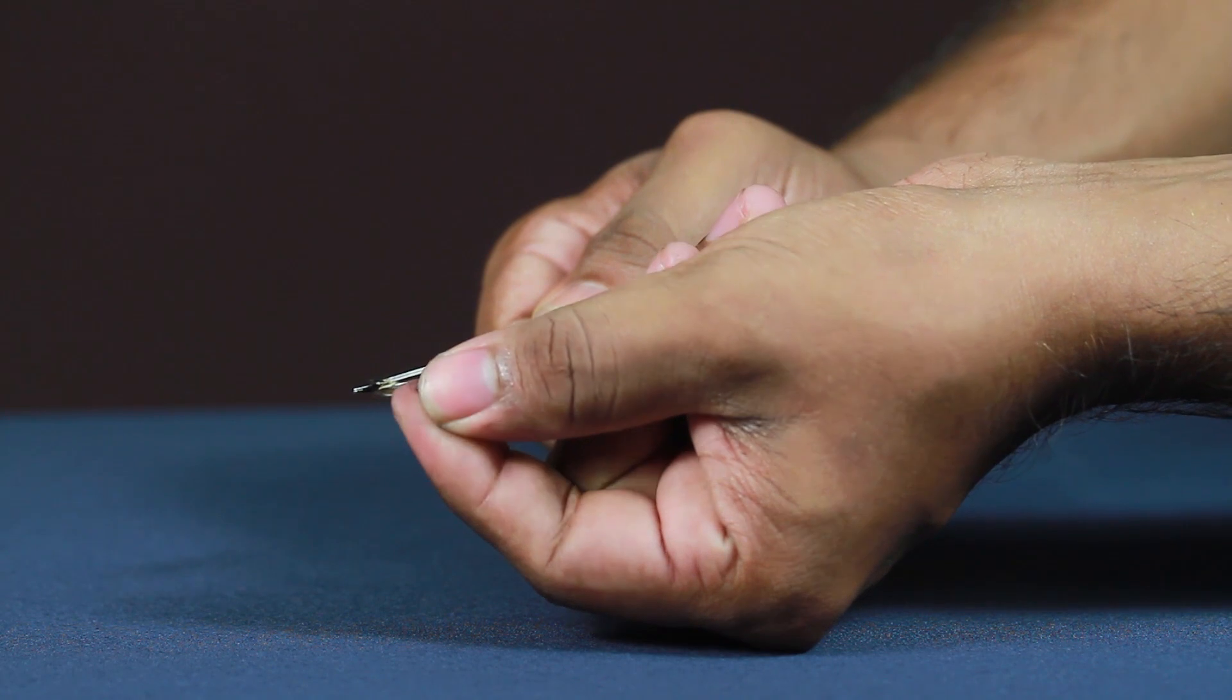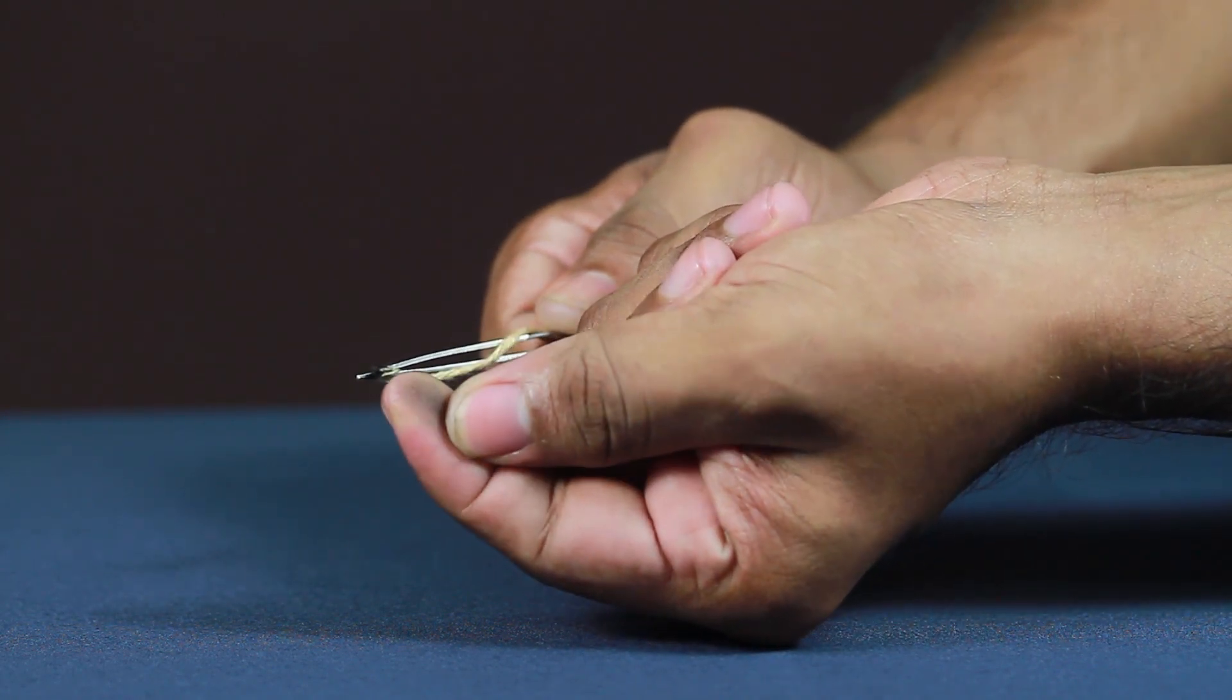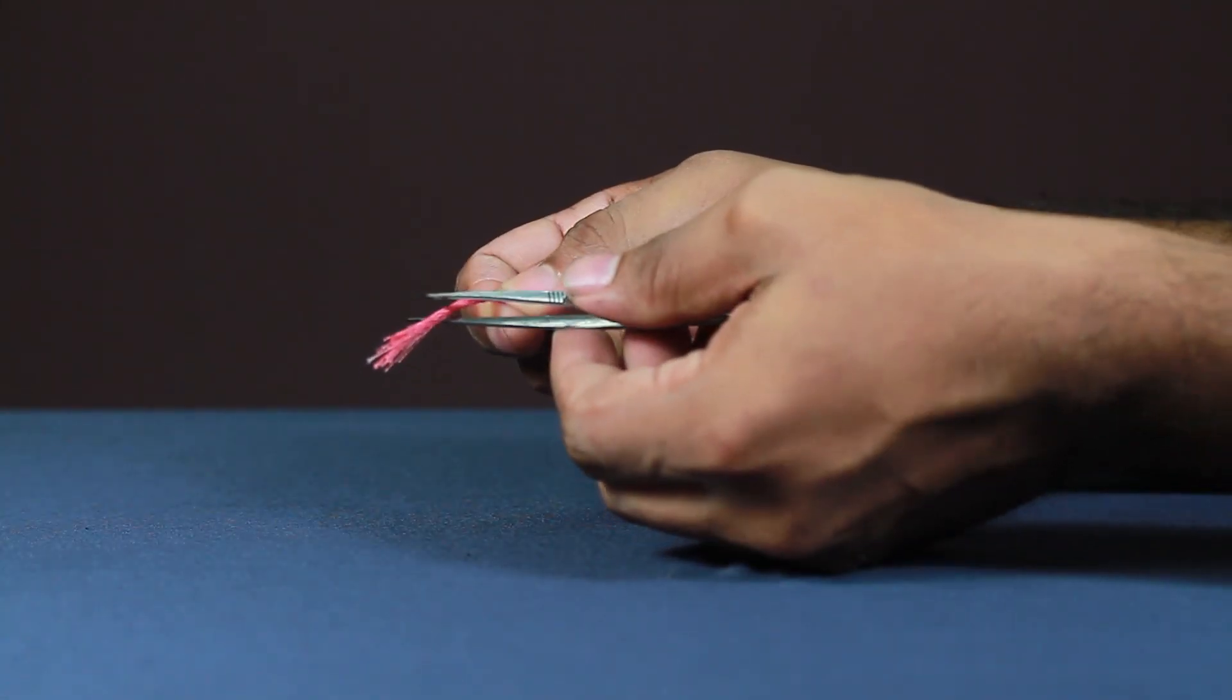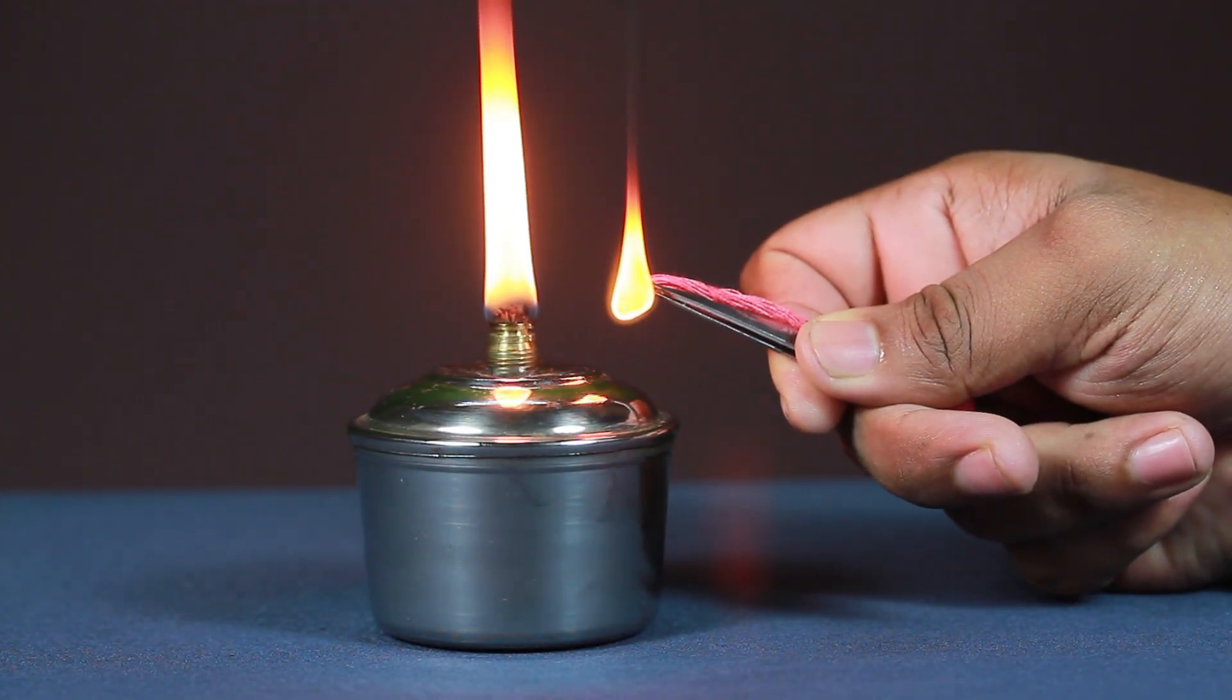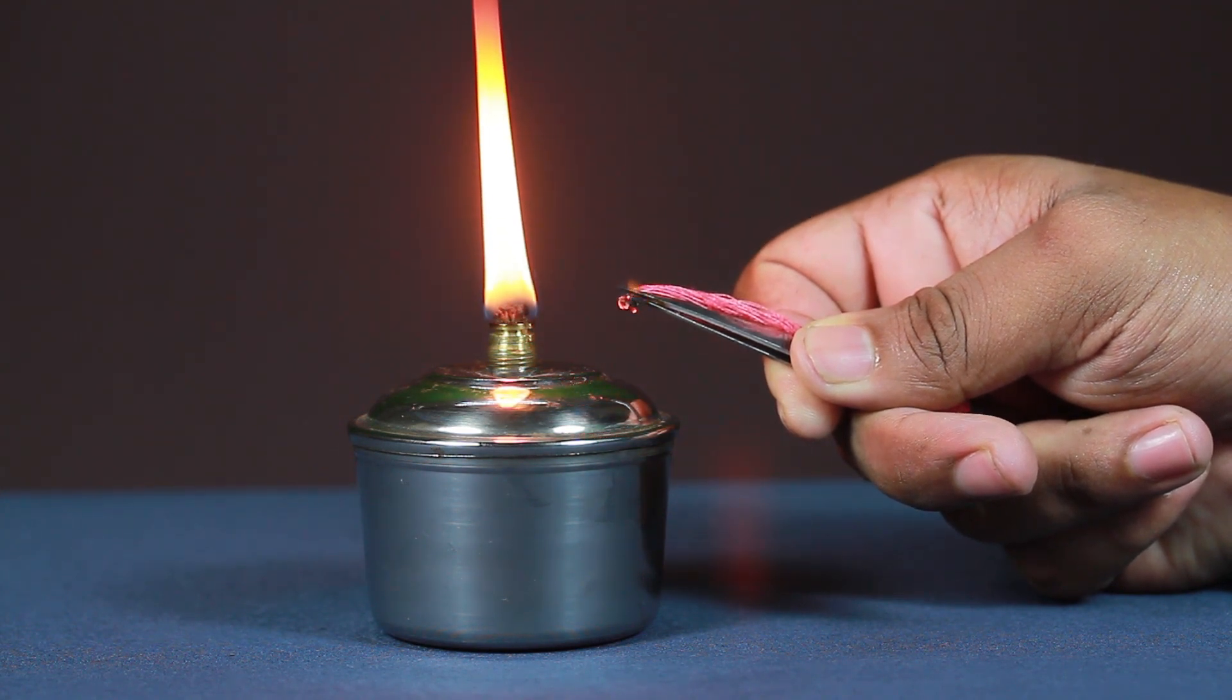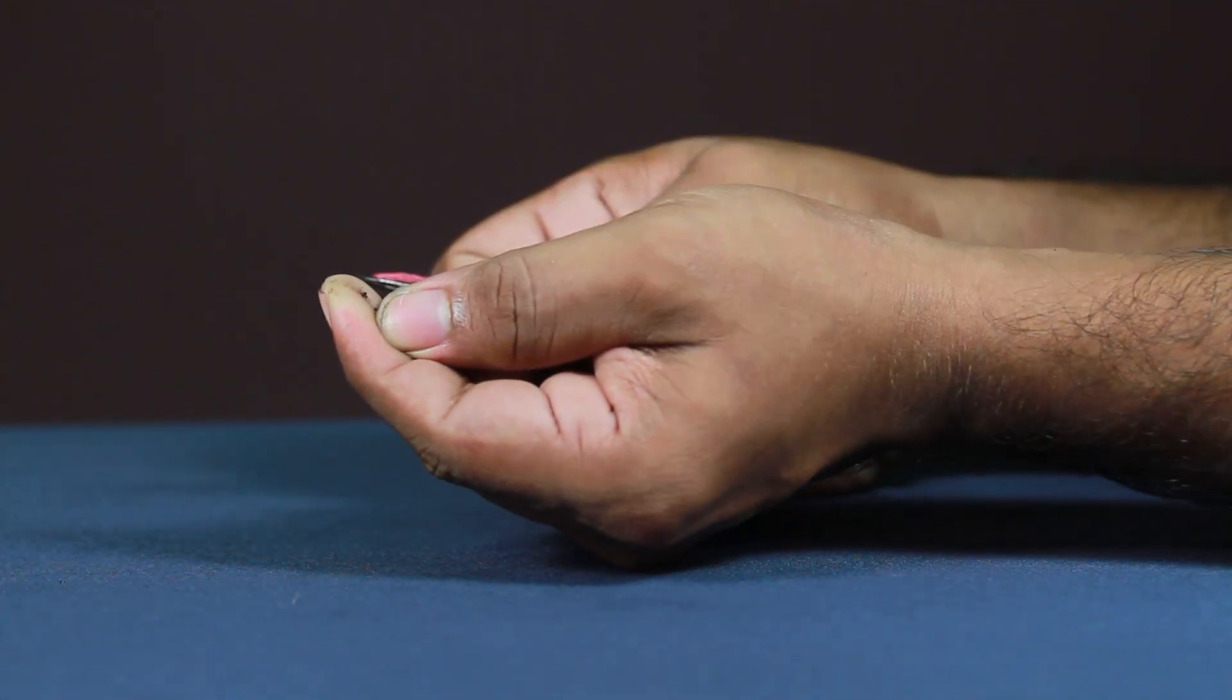The woolen thread burns completely. Take a sample thread, say cotton, and hold it with the forceps. Burn it in the flame of a heating device and observe. The cotton thread burns completely.